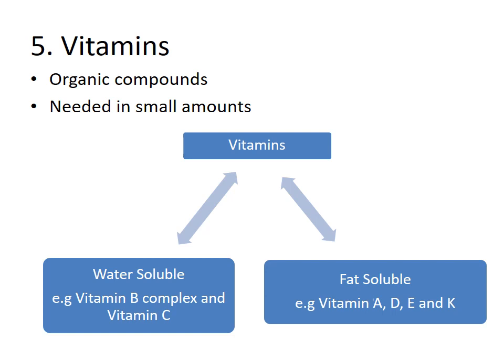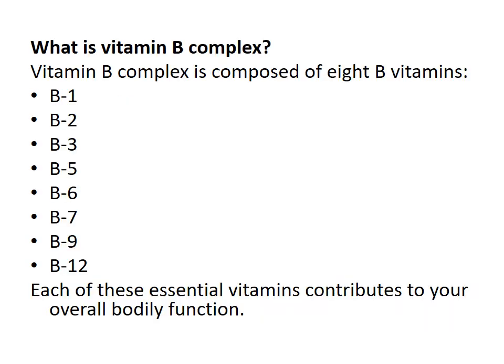The term vitamin B complex — a question should arise in your mind: what does the word complex stand for? Is it only one vitamin or a group of vitamins? The answer is that vitamin B complex is basically composed of eight B vitamins: B1, B2, B3, B5, B6, B7, B9, and B12. Each of these has a separate important function in our body and is required for different performance of functions.